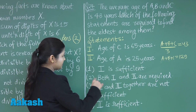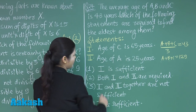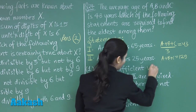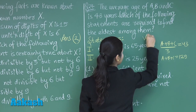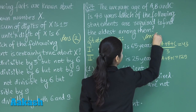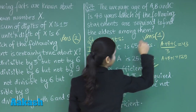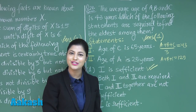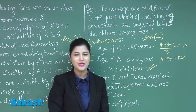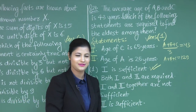The age of C is greater than the age of both B and A. So the answer is option number 1 — only statement 1 is sufficient to answer this question. I hope this question is clear to you. Now let us discuss our next question.